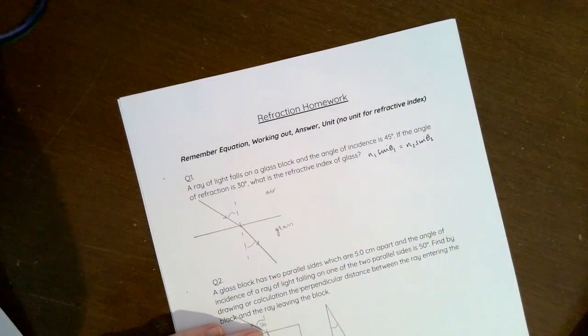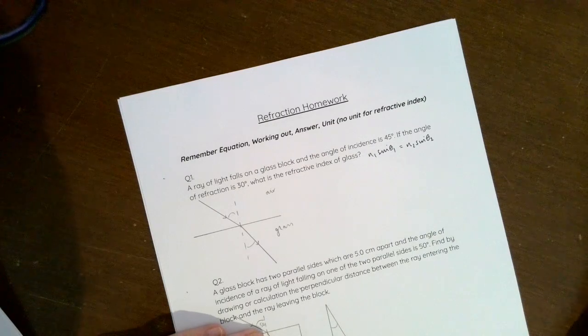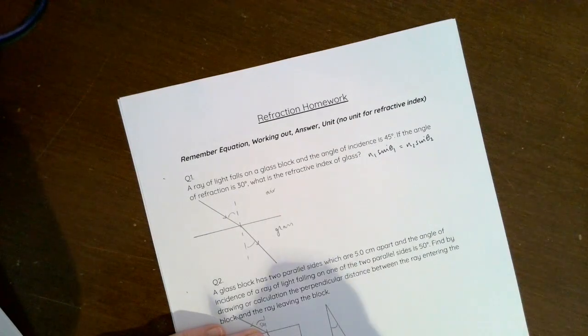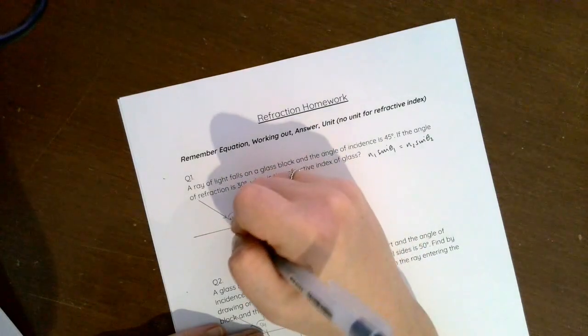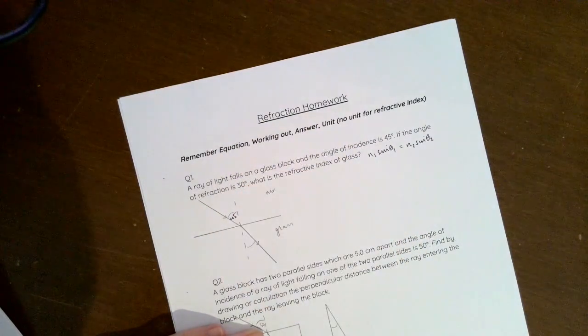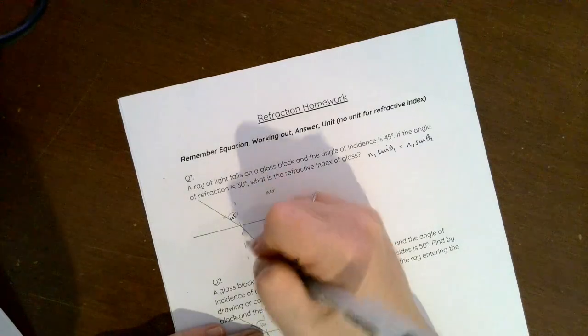A ray of light falls on a glass block and the angle of incidence is 45 degrees. So if it's falling on the glass block, it's coming from air, so this angle is 45.